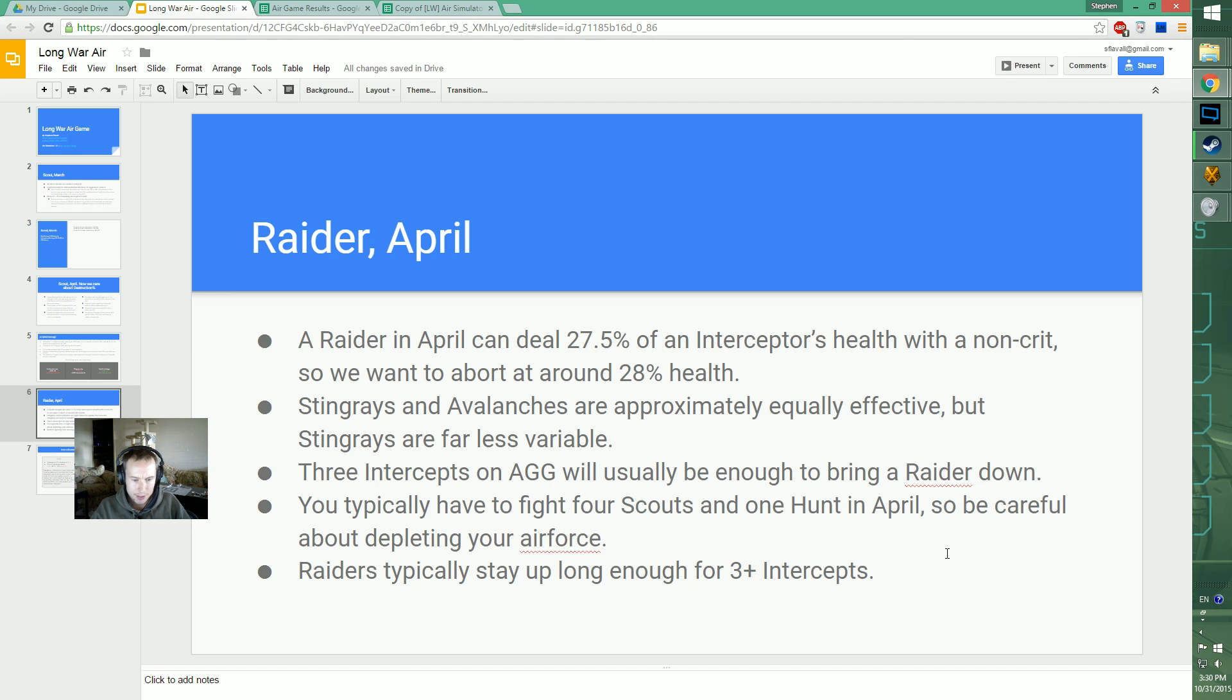Stingrays and Avalanches are approximately equally effective against Raiders, but Stingrays are far less variable, which is really interesting and I'll explain what that means very shortly.